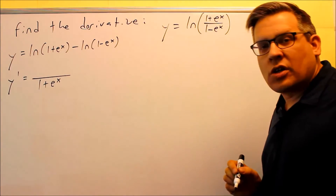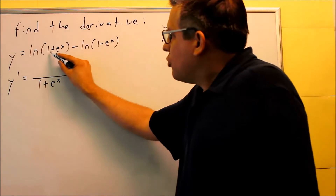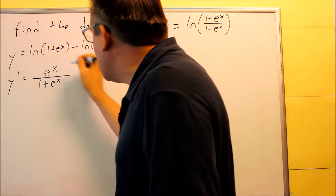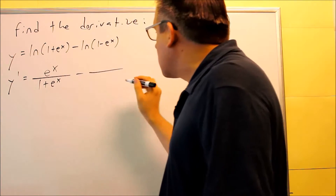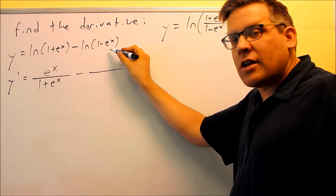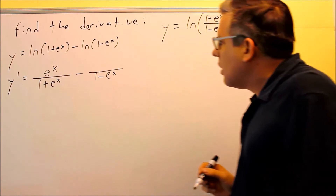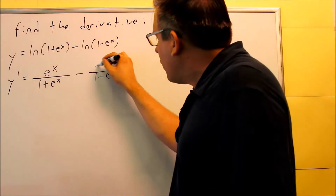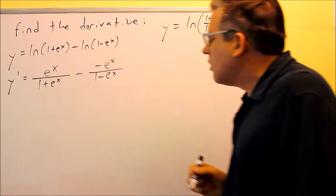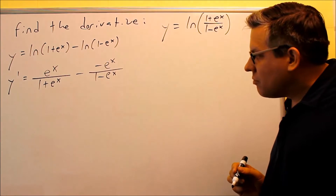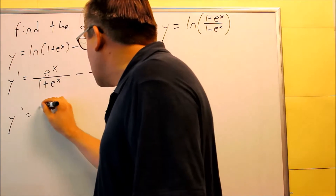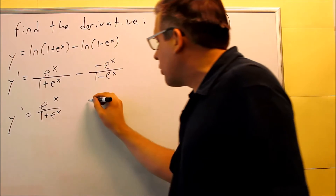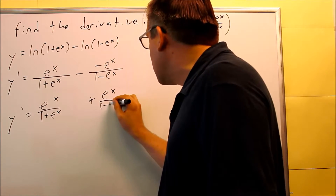u prime goes on top. Derivative of 1 is 0, and derivative of e to the x is itself, so that gives e to the x on top, over (1 + eˣ) on the bottom. Then minus: u is (1 − eˣ), that goes on the bottom. On top, derivative of 1 is 0, there's a negative, and derivative of e to the x is again e to the x. So negative times negative gives a plus, and we get eˣ/(1+eˣ) + eˣ/(1−eˣ).